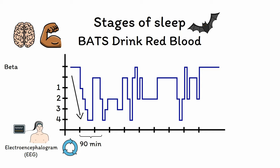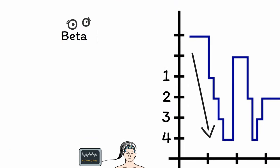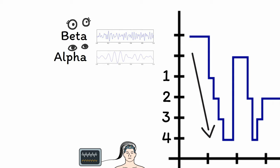First, B is for beta waves. The beginning of the sleep cycle is when someone is awake, with beta waves being the pattern of electrical brain activity that occurs during waking consciousness. Next, A is for alpha waves. On average, people take 15 minutes to fall asleep from the time they go to bed. Between wakefulness and sleep is an in-between state where one feels drowsy but remains conscious. This state is characterized by alpha waves on EEG, which reflects slowed brain activity compared to full wakefulness.